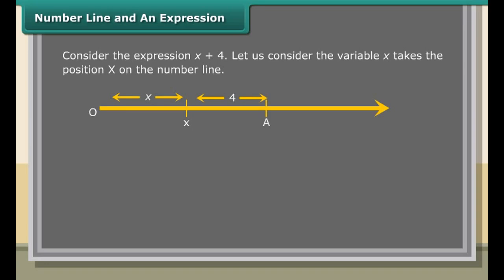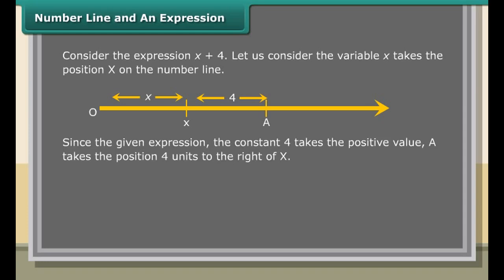Number line and an expression: consider the expression X plus 4. Let the variable X take the position X on the number line. Since the constant 4 is positive, it takes the position 4 units to the right of X. If the expression is X minus 4, the position will be to the left of X.